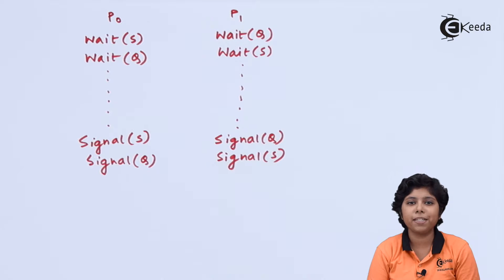Suppose that P0 and P1 are executing concurrently. P0 wants semaphore S to be executed and P1 wants semaphore Q to get executed, so they are performing wait(S) on P0 and wait(Q) on P1. Now if P0 wants to use semaphore Q and P1 wants to use semaphore S, they cannot use them because P0 hasn't signaled the semaphore S before it can be acquired by P1.